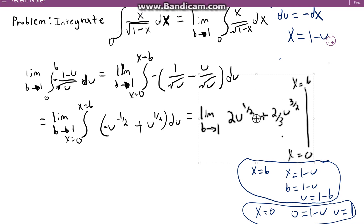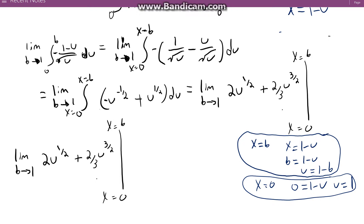So I'm just going to copy and paste this because I'm going to be lazy. Here we are. So now I'm going to convert this back. I'm going to convert the endpoints in terms of u. So we've established when x is equal to b, that is when u is equal to 1 minus b. And when x is equal to 0, that is when u is equal to 1.